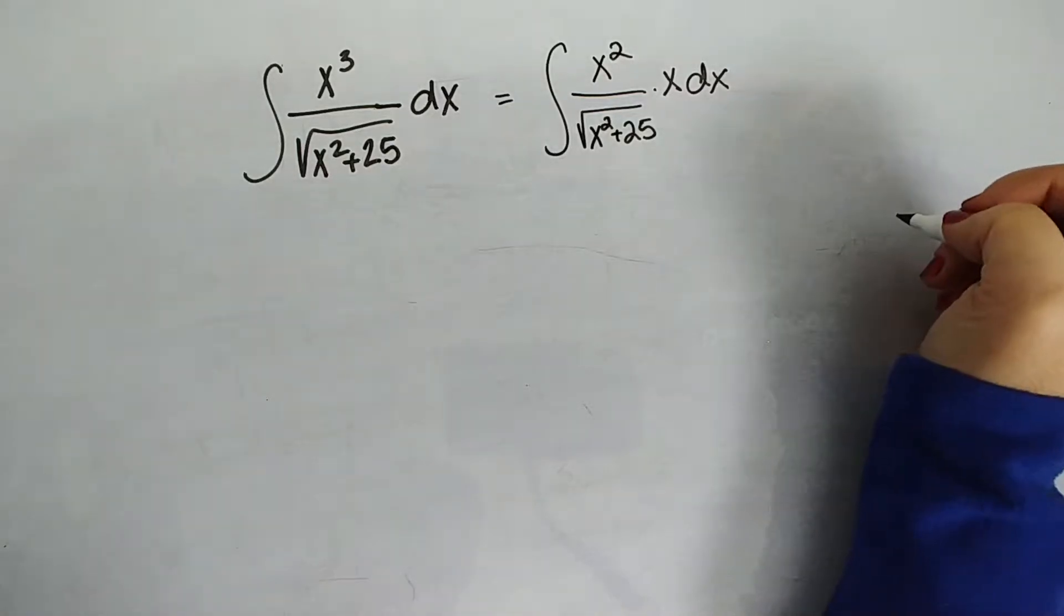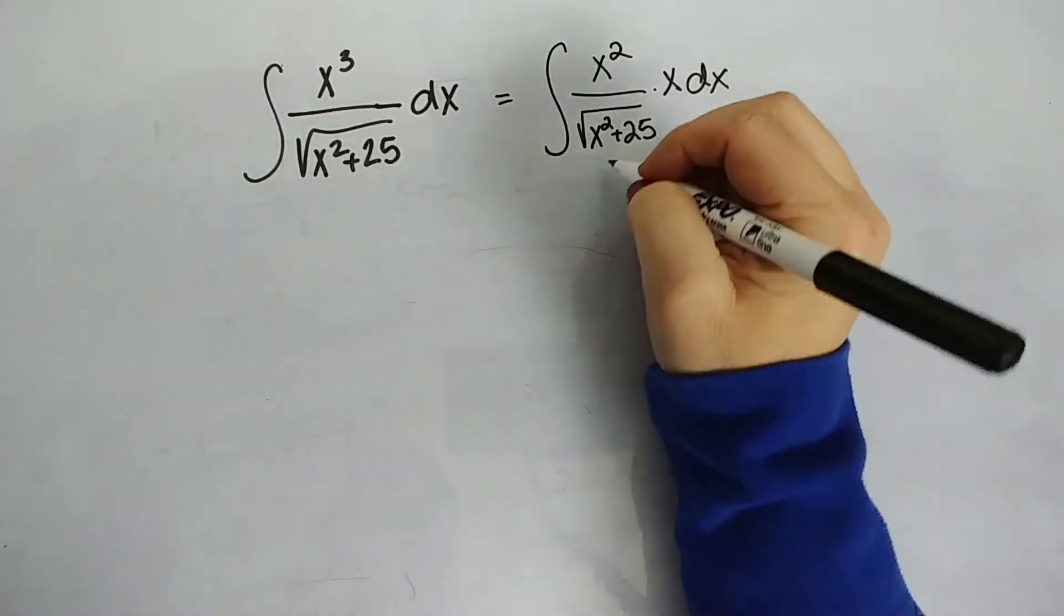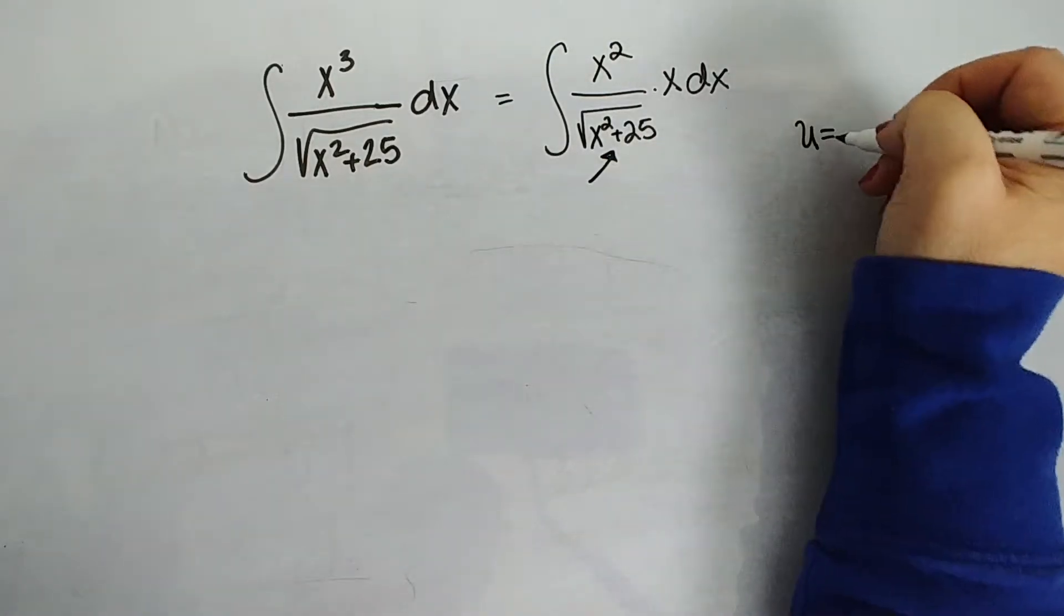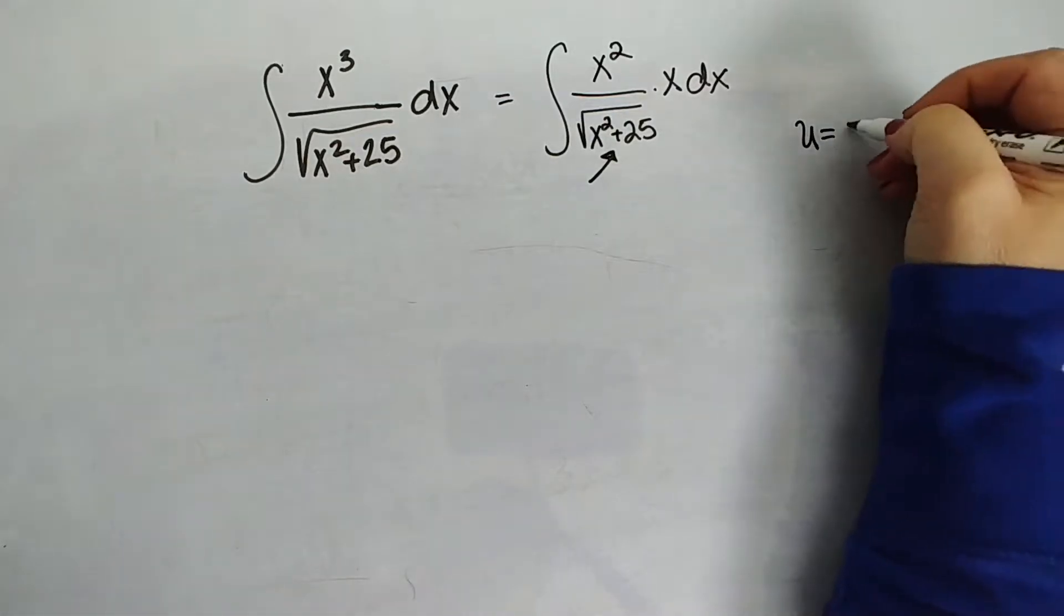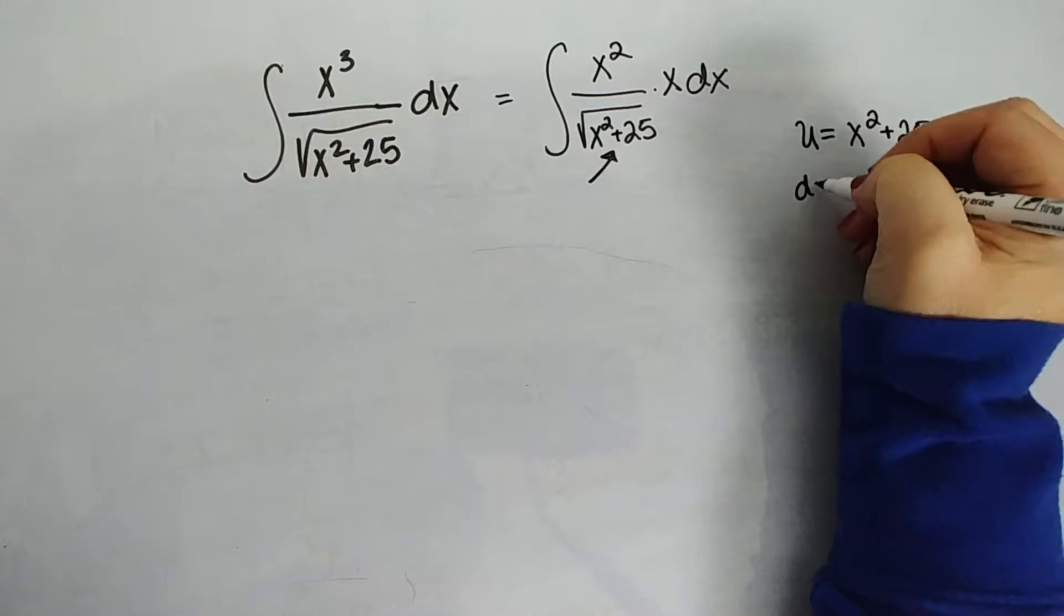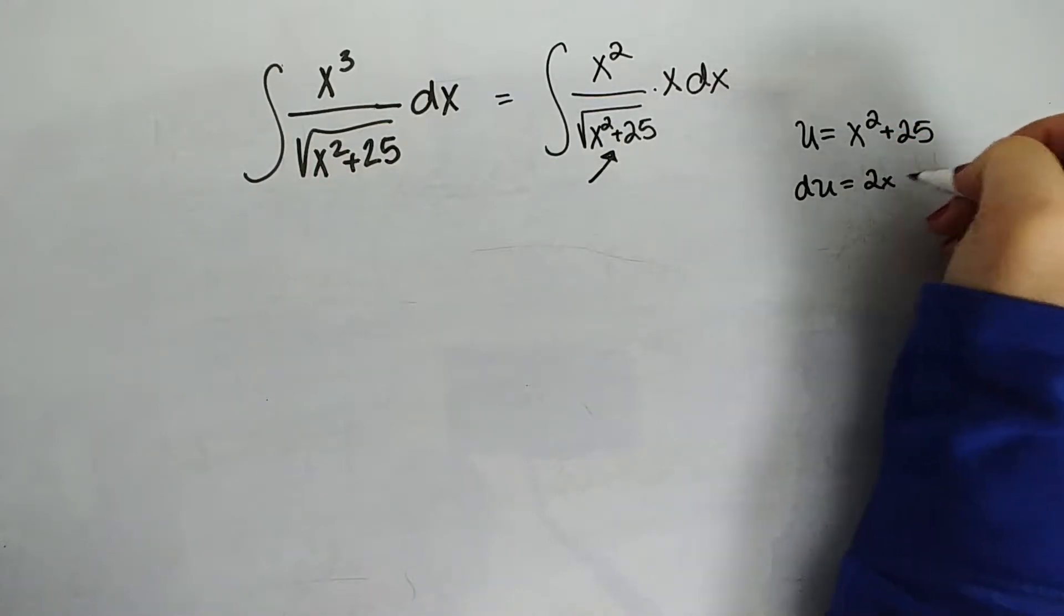Okay, so let's do that u substitution now. Let's talk about what I mean. So I'm going to let u be that crap under the radical. That's what we always let u be. u equals x squared plus 25, making du, the derivative of u equal to 2x dx.